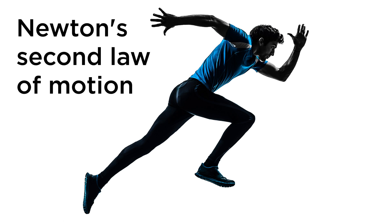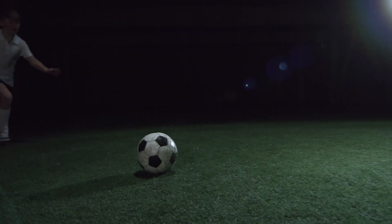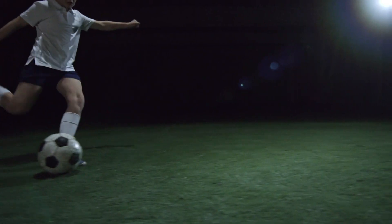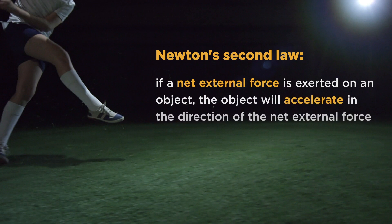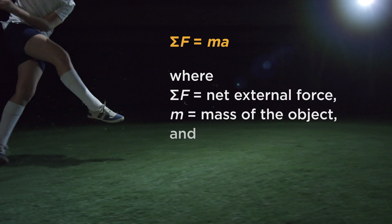Newton's second law of motion is commonly referred to as the law of acceleration. Simply stated, it says that if a net external force is exerted on an object, the object will accelerate in the direction of the net external force, and its acceleration will be directly proportional to the net external force and inversely proportional to its mass. This can be stated mathematically as the net external force equals the mass of the object times the instantaneous acceleration of the object.